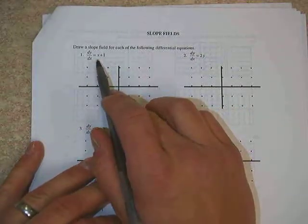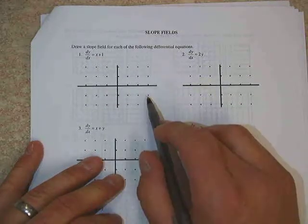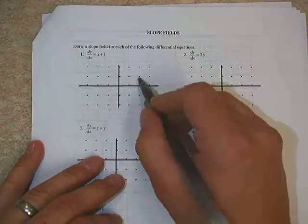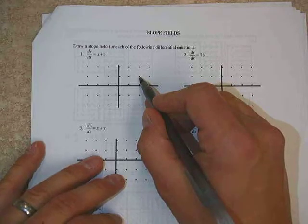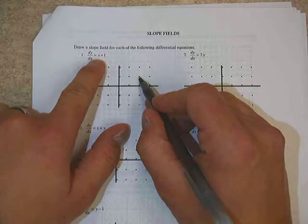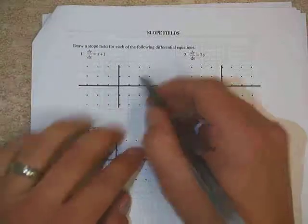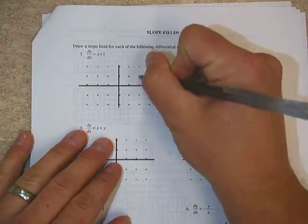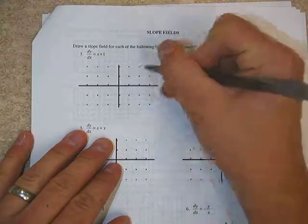The general strategy just to review is to take each of these points, whatever they may be. Let's just say for argument's sake, we take the point (2, 1), and at point (2, 1), if we were to plug a 2 into this, we would get 2 plus 1, which would be 3. That means our derivative here would be 3. So at that point, we would draw a line segment here that has a slope of 3.